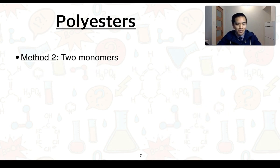For method 2, where there are two monomers, we are going to have what we call a diol and a dicarboxylic acid. So an alcohol with two hydroxyl functional groups, a carboxylic acid with two carboxyl functional groups.